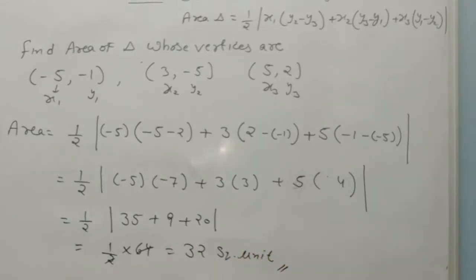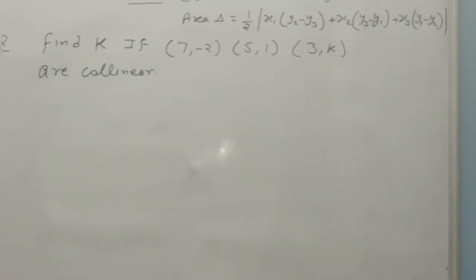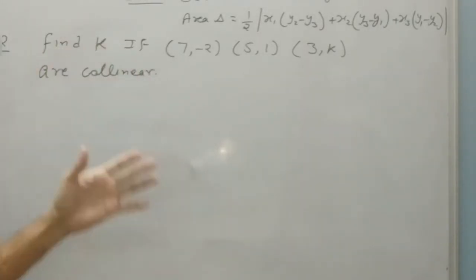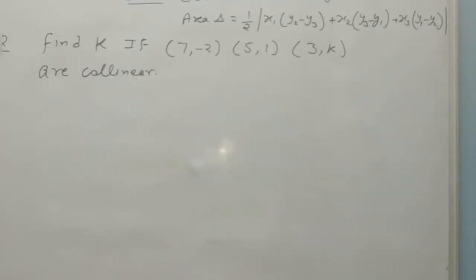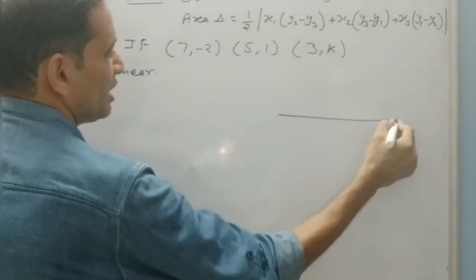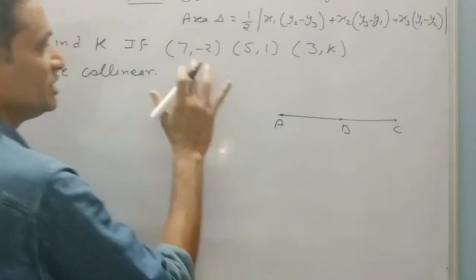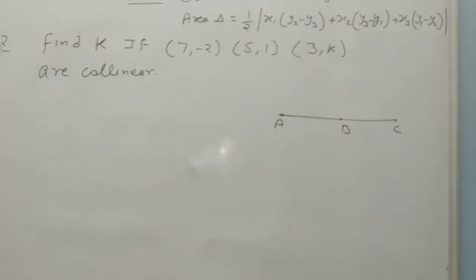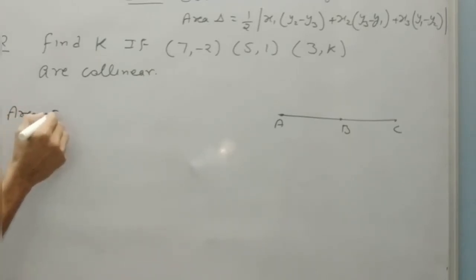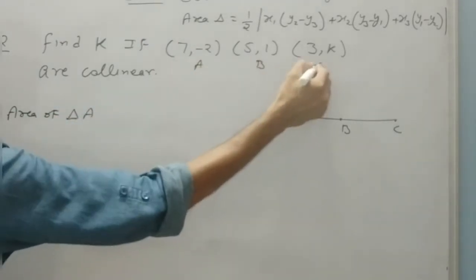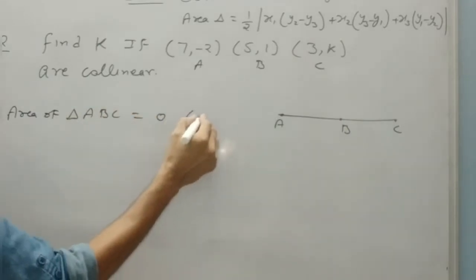Very simple question. Just by using the formula of area of triangle we can find the area. Now question number 2: find the value of k if these points are collinear. Collinear means if the 3 points are on the same line. If they are collinear then there is no triangle, so the area of triangle ABC will be equal to 0.